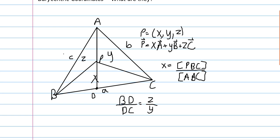Next, we will denote lowercase letters just like in the vector video. The lowercase letter a corresponds to the length of the side of the triangle opposite from capital A, the point capital A.